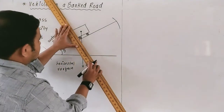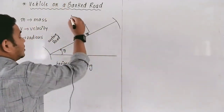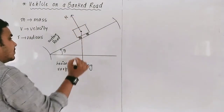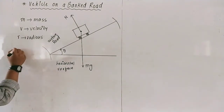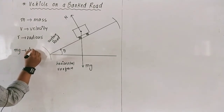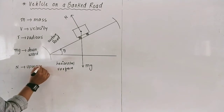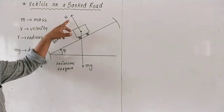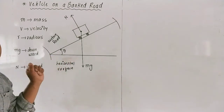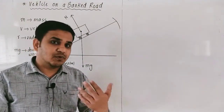The forces acting on the car are: weight mg acting downward, and the normal reaction which is always perpendicular to the surface. When this car takes a turn along a banked road, the normal reaction resolves into two components. Someone has to provide the centripetal force as well, since the car is performing circular motion.